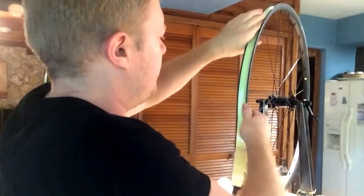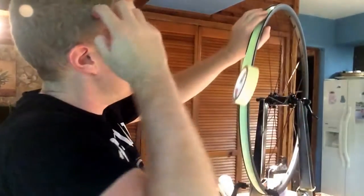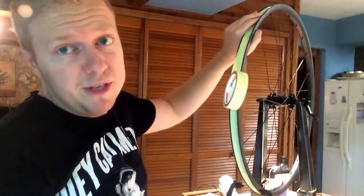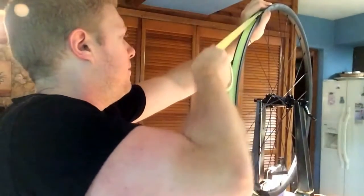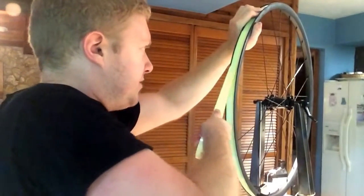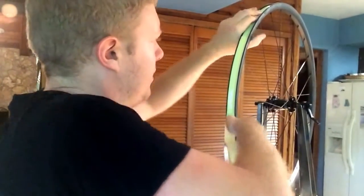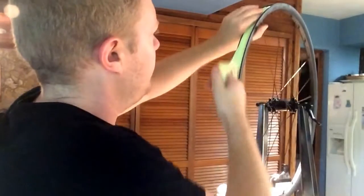What I like to do, Stan recommends doing it two times around the rim. I don't find it really necessary. I like to just go a couple of spoke holes past where it overlapped just to make sure that I've got a good tight seal.